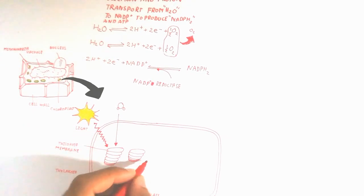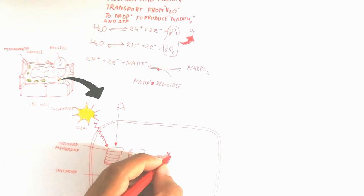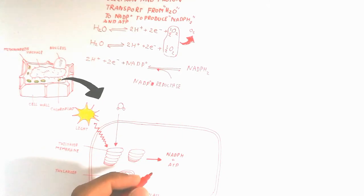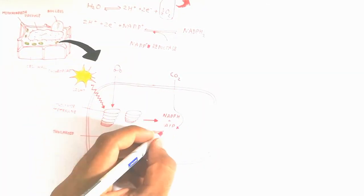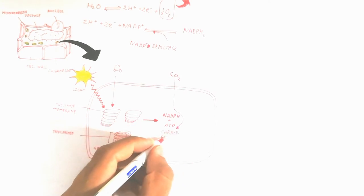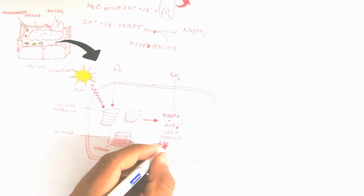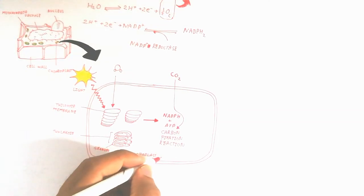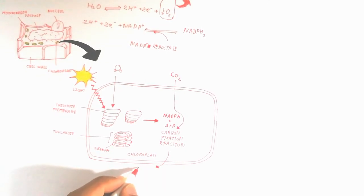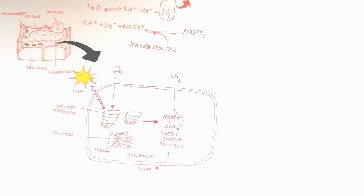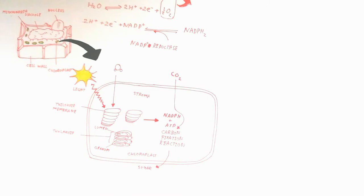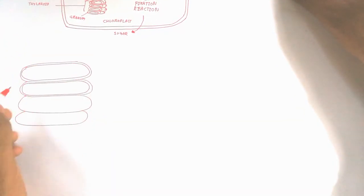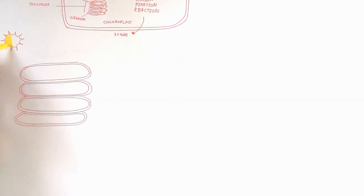In the presence of water and light, the thylakoid membrane converts these inputs to produce NADPH and ATP. These NADPH and ATP are used for the fixation of carbon dioxide in the Calvin cycle, which produces sugar. That is the whole process of photosynthesis. We have discussed the Calvin cycle in a previous video.